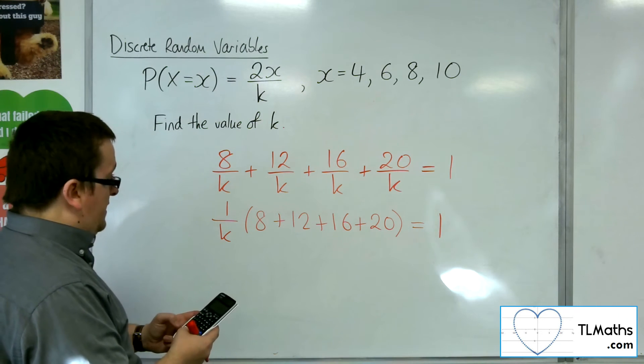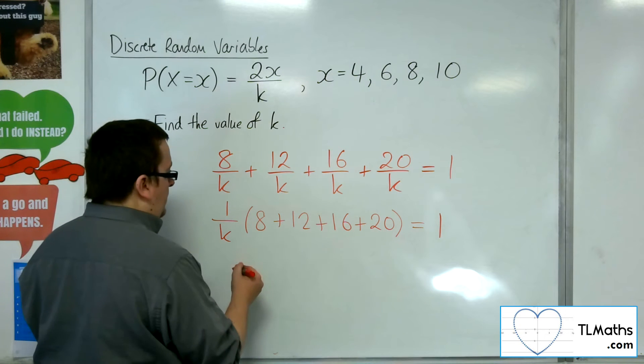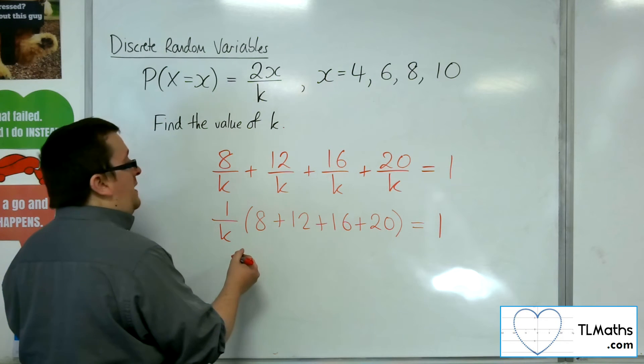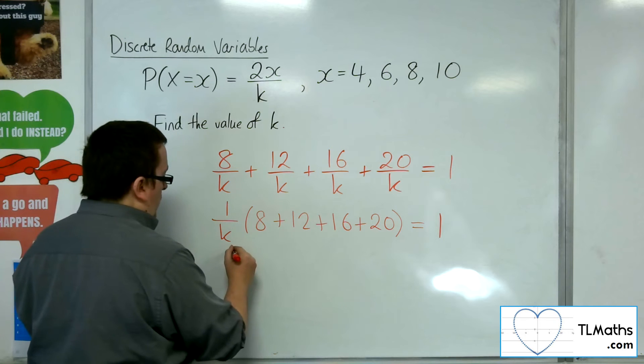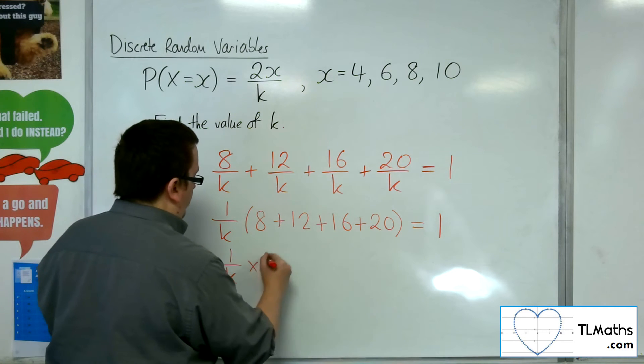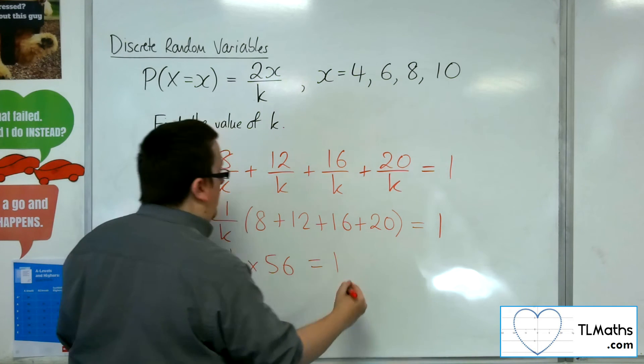So, 8 plus 12 plus 16 plus 20 is 56. So, that must mean that we've got 1 over k times 56 must be equal to 1.